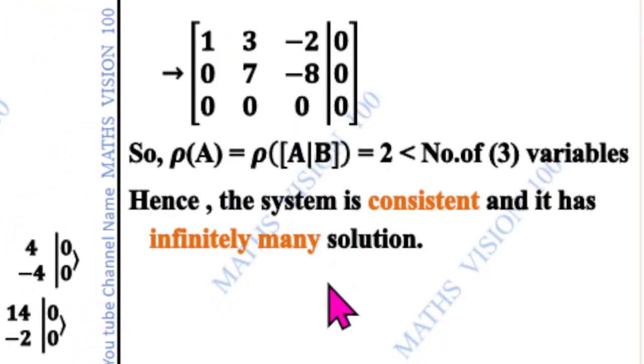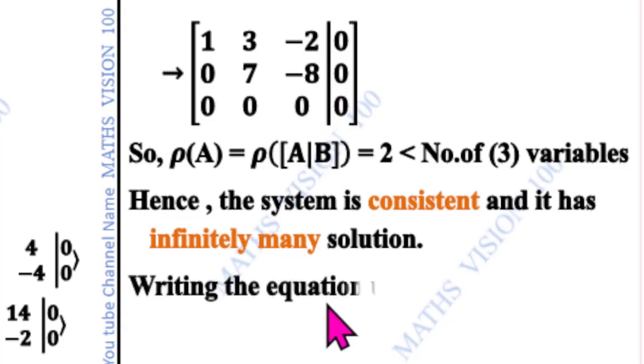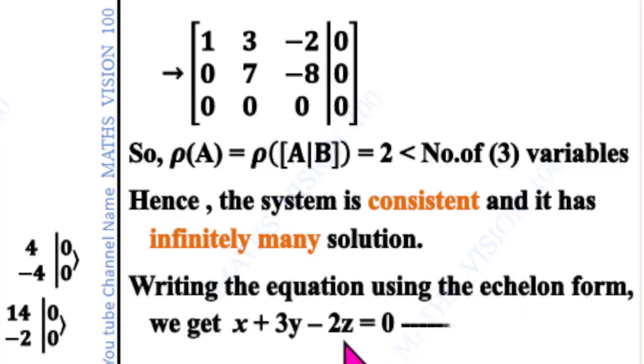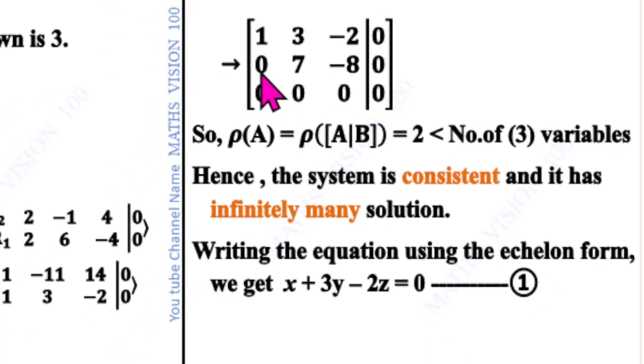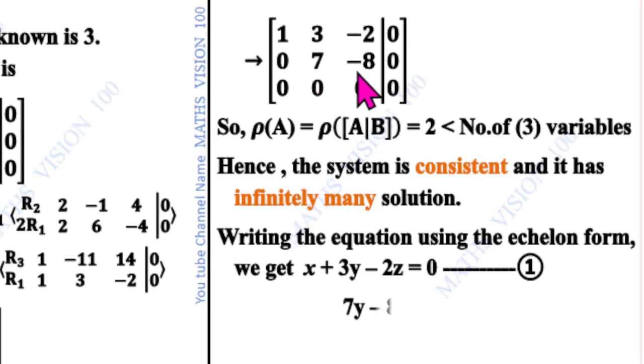Writing the equation using the echelon form, we get x plus 3y minus 2z equals 0, this is the first equation. The second equation is 7y minus 8z equals 0. Third row is 0 equals 0.